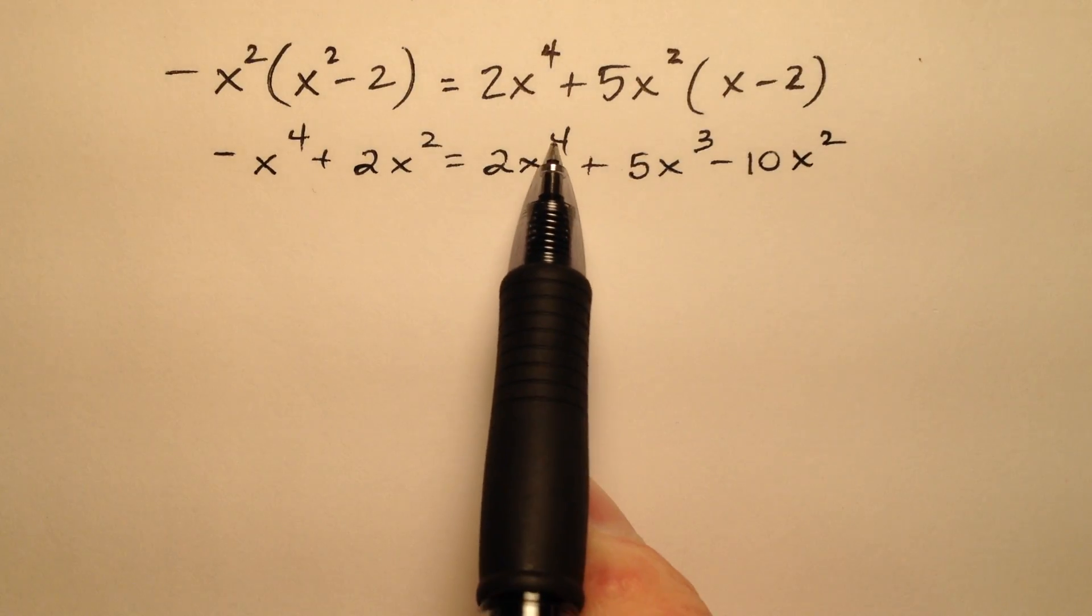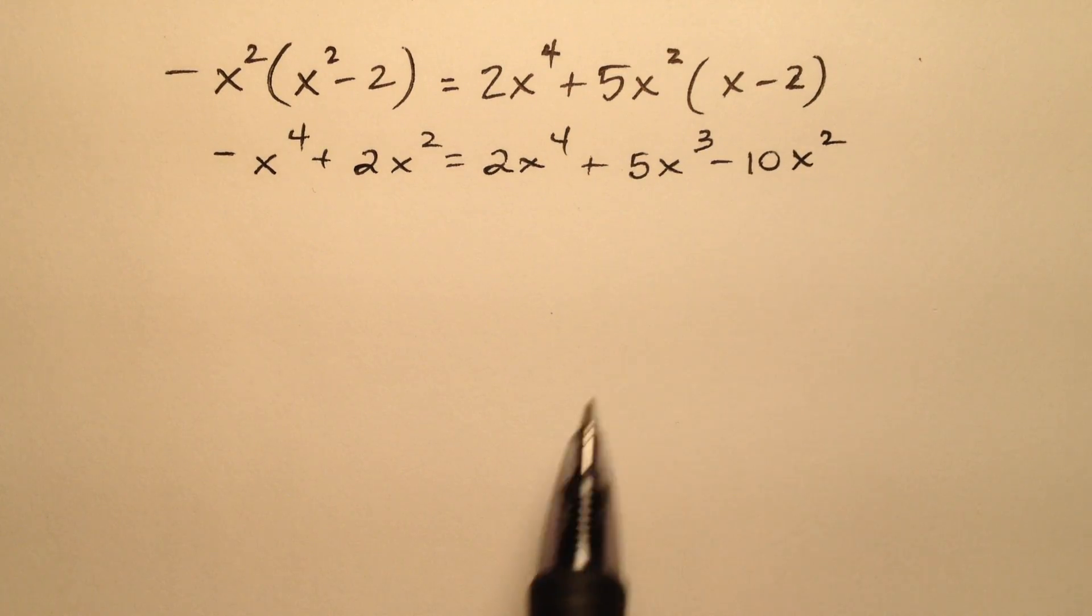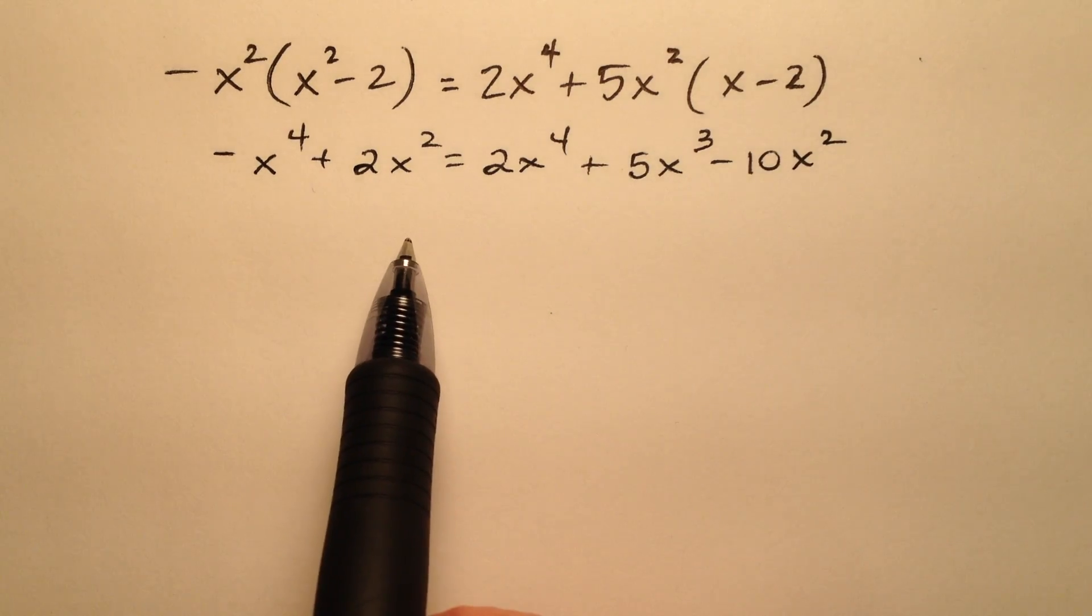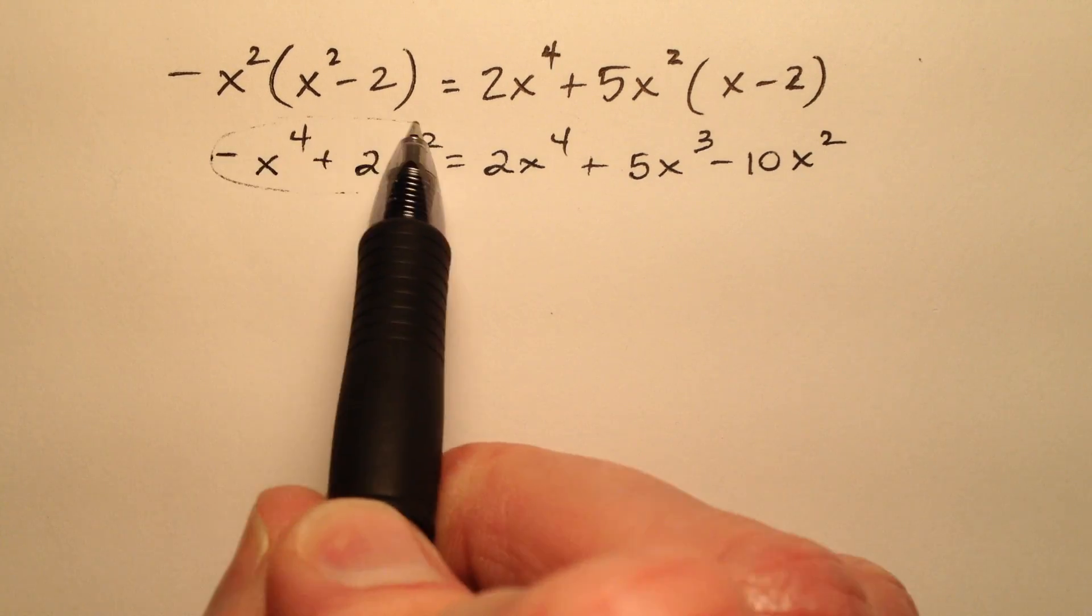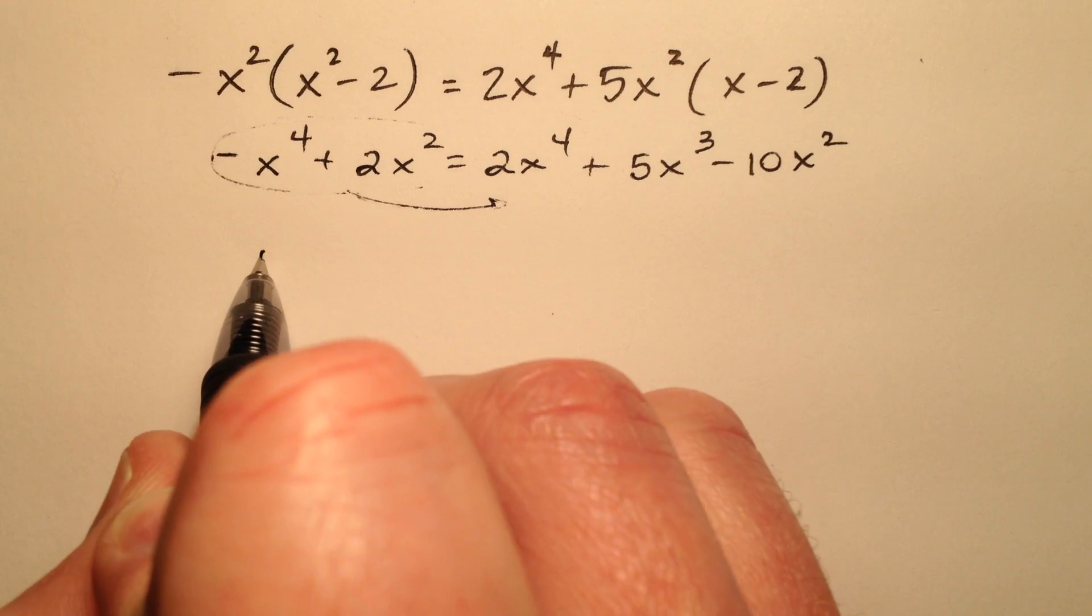I notice my terms have degree 4, degree 3, and degree 2. I want to put them on the side where my leading coefficient will be positive, and it looks like that will be the right side. So I'm going to take these two terms and push them over to the right side of the equation.